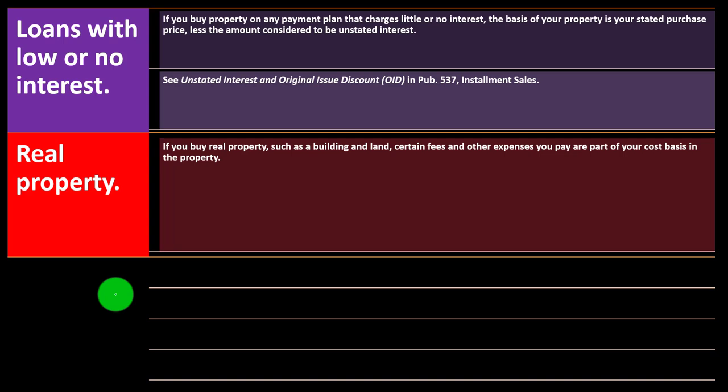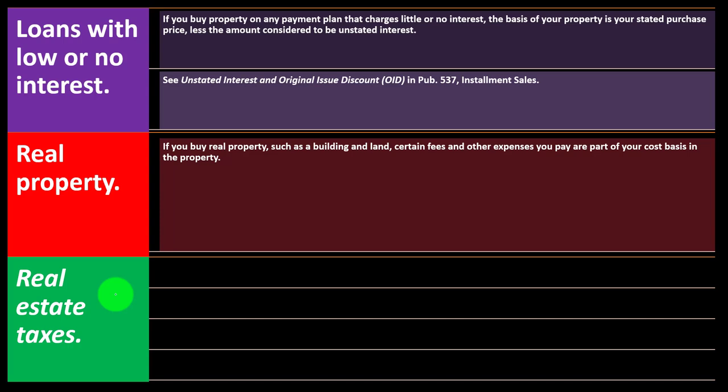For real property such as a building and land, certain fees and other expenses you pay are part of your cost basis. When you look at the closing statement, beyond the purchase price itself you'll have additional costs needed to organize the purchase — similar to how freight and installation are included for equipment. All that was needed to get the property ready to rent, so it should not be expensed; it must be included in the cost of the property.